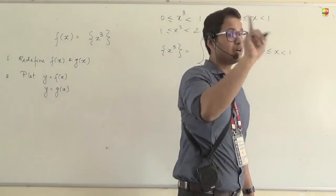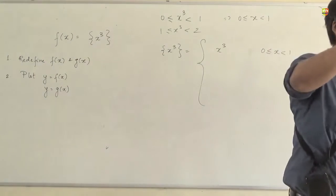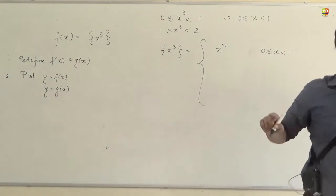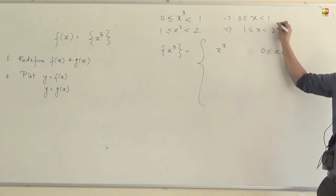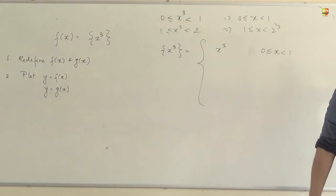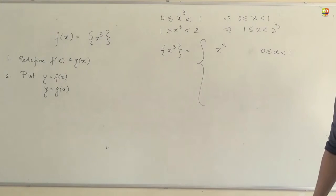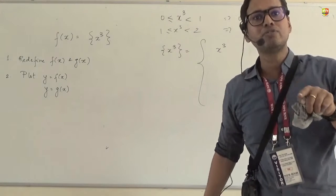Now, next step. If your x cube is between 1 and 2, not x. X cube is between 1 and 2. Then x will be between 1 and cube root of 2. Yes or no? If x cube is between 1 and 2, x will be between 1 and cube root of 2. What do you have friends? Understood?